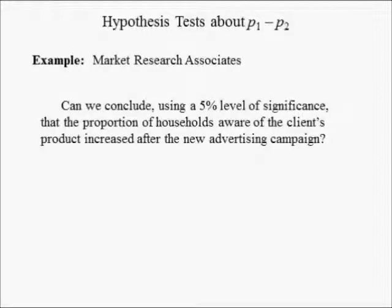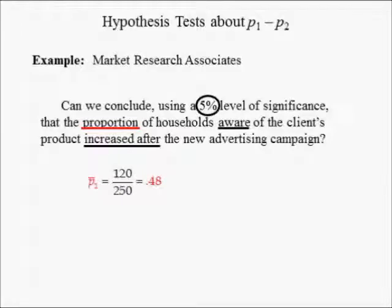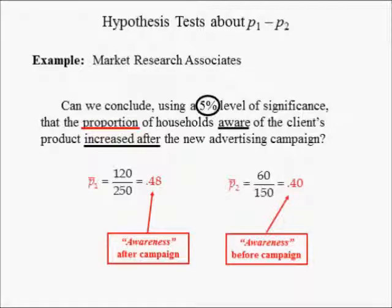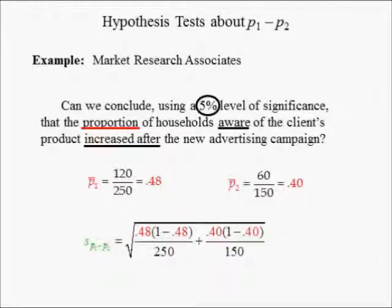In the Market Research Associates example, can we conclude, using a 5% level of significance, that the proportion of households aware of the client's product increased after the new advertising campaign? The sample proportion of households aware of the client's product after the ad campaign began is 0.48. The sample proportion before the ad campaign is 0.40. Thus, 48% of those surveyed after the ad campaign were aware of the client's product. Since we want to know if the campaign increased awareness, we are conducting a one-tailed test.